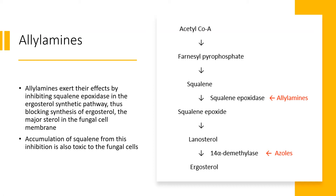By inhibiting squalene epoxidase, allylamines prevent the synthesis of ergosterol, the most important cytoplasmic membrane sterol in fungi. In addition, when squalene epoxidase is inhibited, there is accumulation of squalene. This accumulation of squalene is also toxic to the fungal cells. So there are two ways allylamines are toxic: inhibiting ergosterol synthesis and accumulation of squalene, which is toxic to fungal cells.